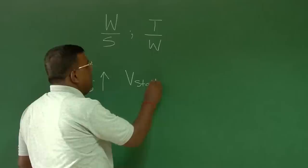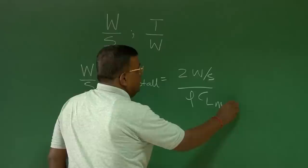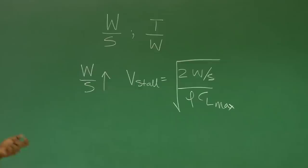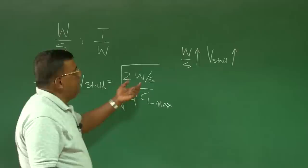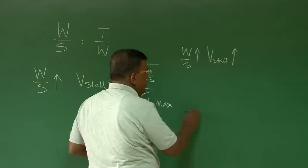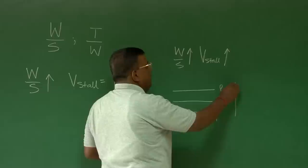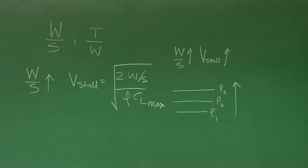V_stall is a very important parameter, which can be expressed as the square root of 2 times wing loading divided by rho times CL_max. If wing loading goes on increasing, then V_stall also increases if other things are kept the same. Even for a constant wing loading, as I try to take off at different altitudes — rho1, rho2, rho3 — the density of air goes on decreasing, so V_stall will also go on increasing.